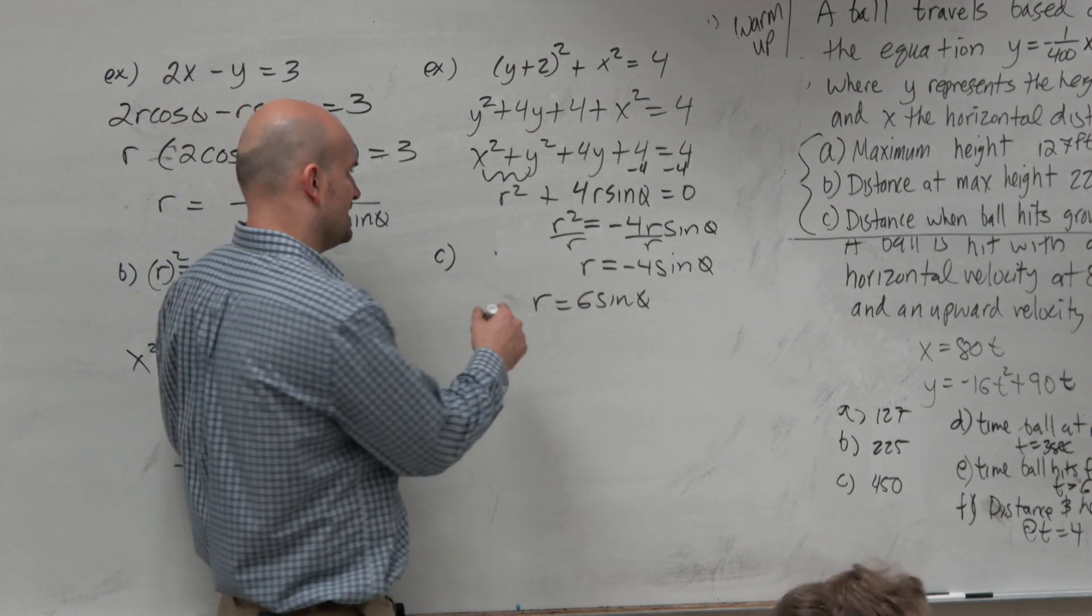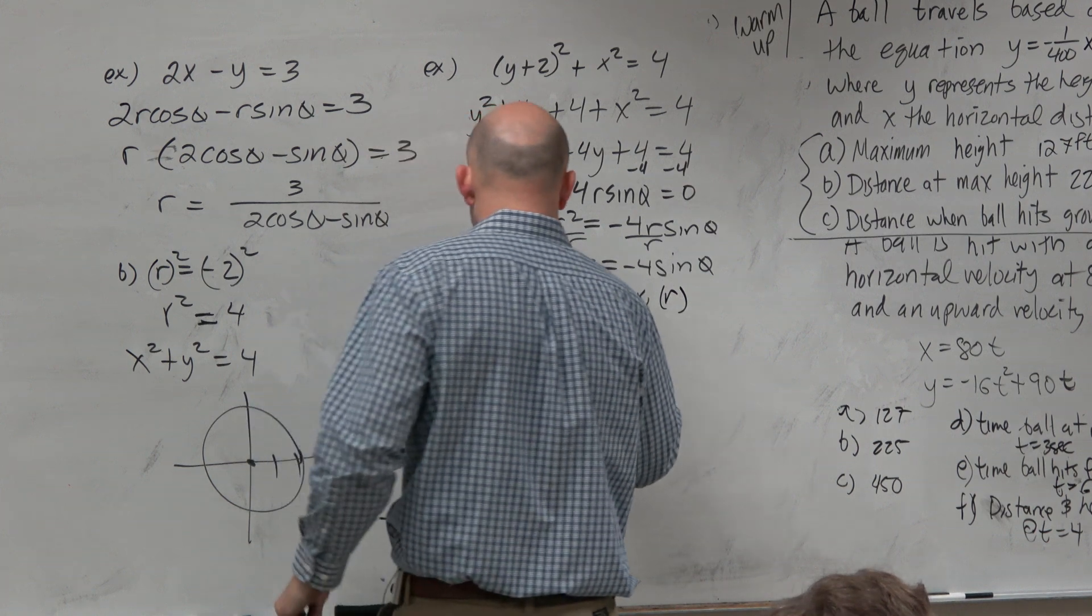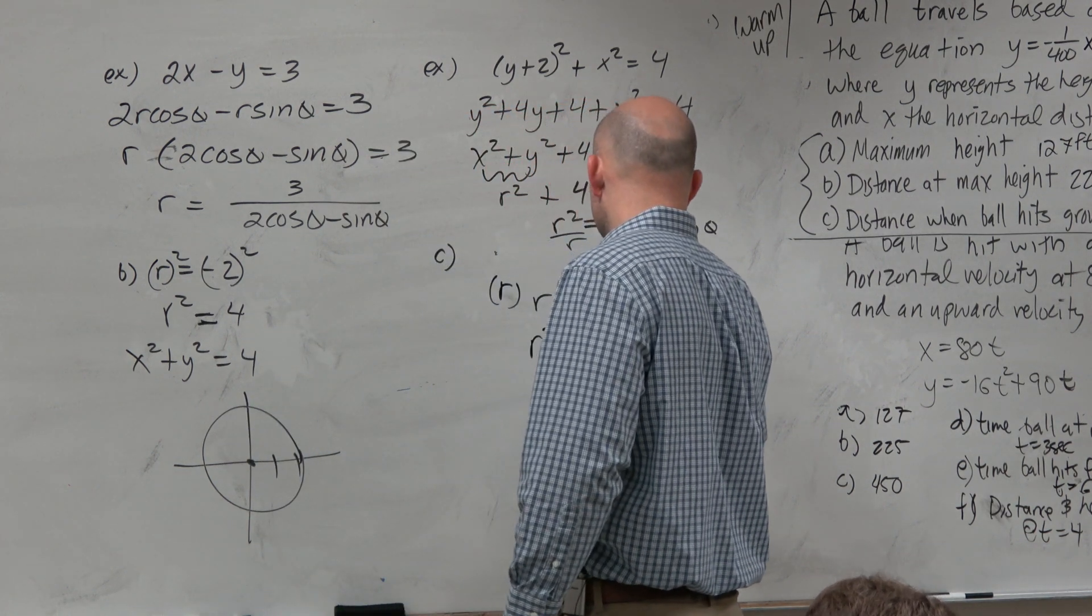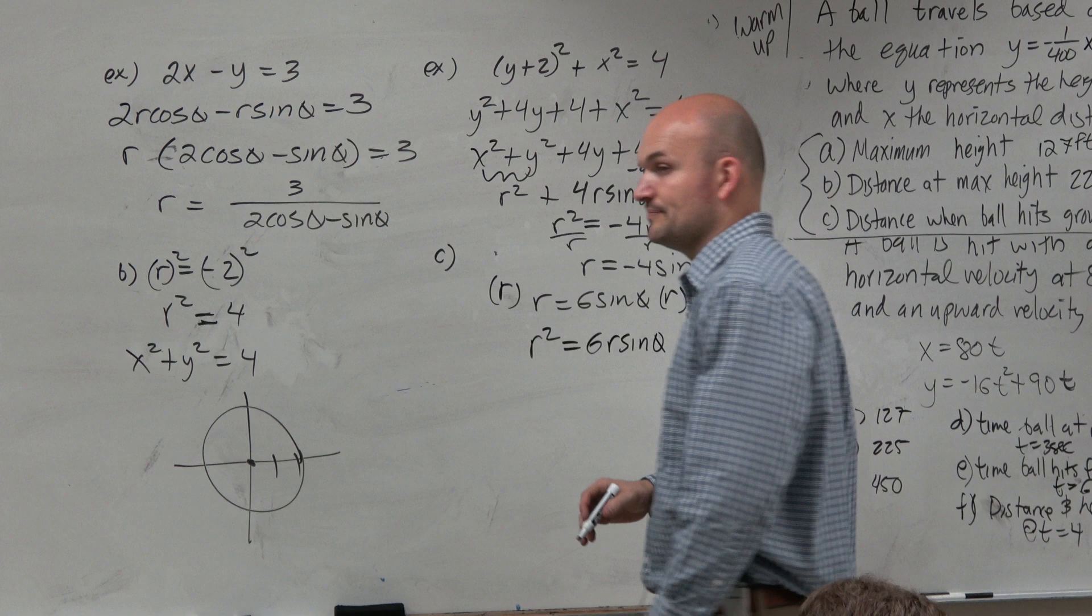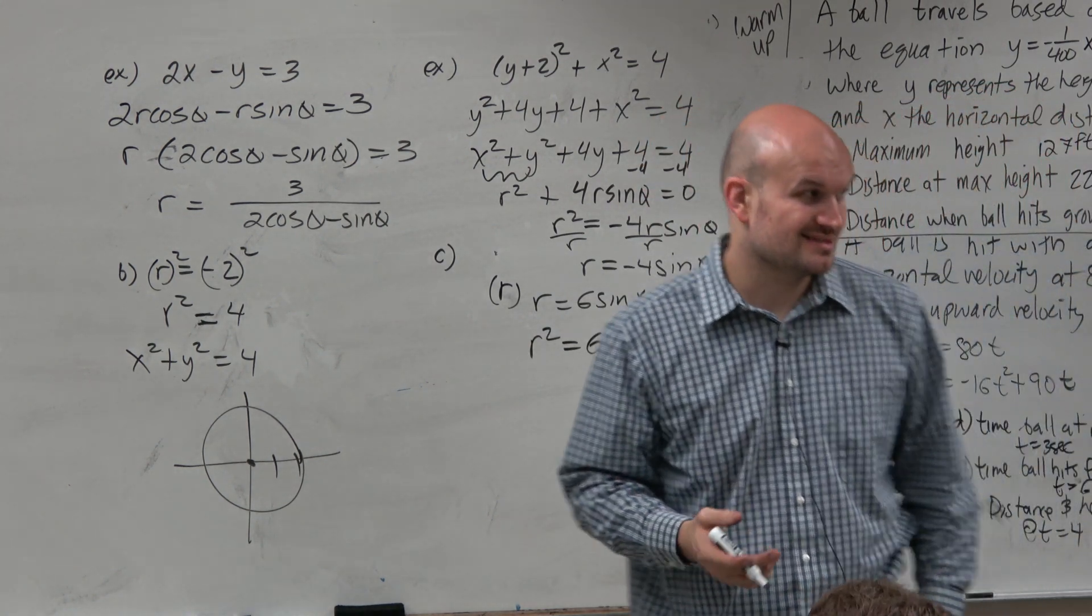So in this case, though, I can multiply by an r on both sides. By multiplying by an r on both sides, I get r squared equals 6r sine of theta. Can I now eliminate my r's and thetas? Yes.